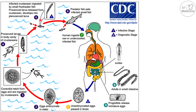A small freshwater fish then ingests the infected crustacean. The procercoid larva is released from the crustacean and develops into the next phase — the plerocercoid larva. A larger fish then eats the infected small fish and becomes infected itself. A human then eats that larger fish raw or undercooked, the plerocercoid larva develops into an adult tapeworm, and the cycle continues.